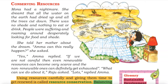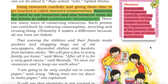What can we do about it? Raju asked. Lots, replied Amma. Using resources carefully and giving them time to get renewed is called resource conservation. Balancing the need to use resources and also conserve them for the future is called sustainable development. There are many ways of conserving resources. Each person can contribute by reducing consumption, recycling and reusing things.